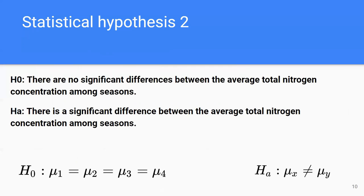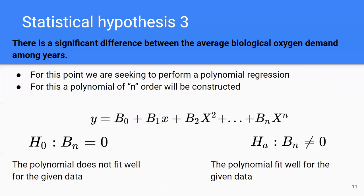The second hypothesis is that there is no significant difference between the average total nitrogen concentration among seasons. The null hypothesis is that the averages across all seasons are equal, and the alternative is that at least one is different. The third hypothesis concerns whether biological oxygen demand changes along the years. We will perform a polynomial regression of nth order, where the null hypothesis is that the nth term equals zero — meaning the polynomial does not fit well — and the alternative is that it is different from zero, meaning the polynomial fits well.